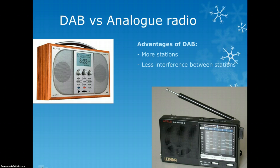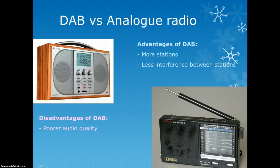The disadvantages of DAB is that you can get poorer audio quality. Sometimes you either get it or you don't really, as we talked about with digital signals. Also, there's less coverage with DAB at the minute - it doesn't cover as much of the countryside as analog radio does.